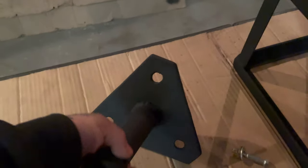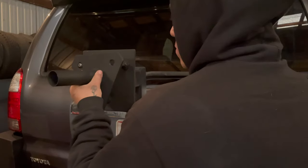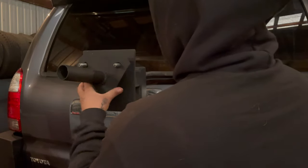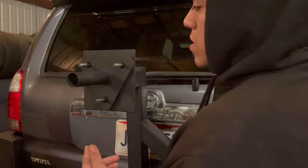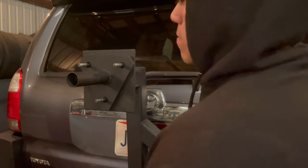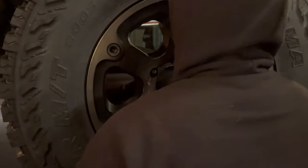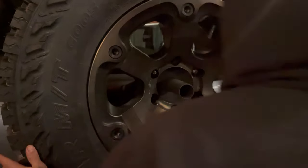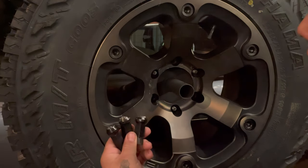First we're going to install the mount that goes onto the tire carrier. Now that this is on here we're going to mount the wheel and tire on it. Now that the wheel is mounted we're going to tighten it down.